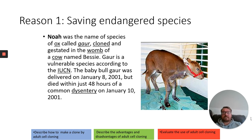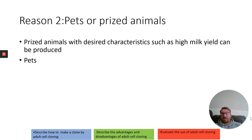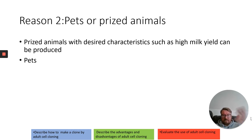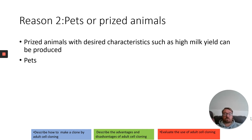Similar to the de-extinction project, adult cell cloning can allow us to clone pets or prized animals. Maybe you've got an animal with a desired characteristic — you could take the nucleus from that animal, place it into an empty egg cell, give it a mild electric shock, and implant it into a surrogate mother to have babies with that really high milk yield or whatever characteristic you want. It also allows us to clone our pets, which might have sentimental value to us.